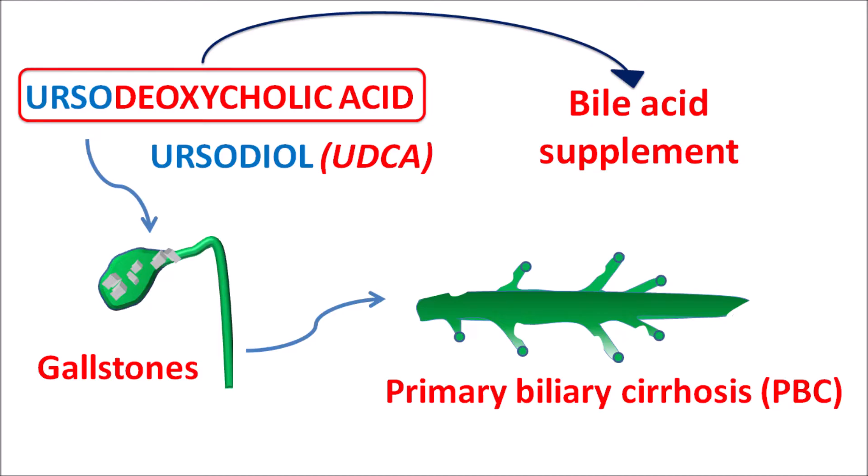For all these conditions, the main reasons are decreased biliary flow and increased gallstone formation. In such conditions, ursodeoxycholic acid can be given to reduce gallstone formation as well as to increase biliary secretion. Today we will cover the chemical nature, administration, mechanism of action, how it reduces gallstone formation, and important side effects.